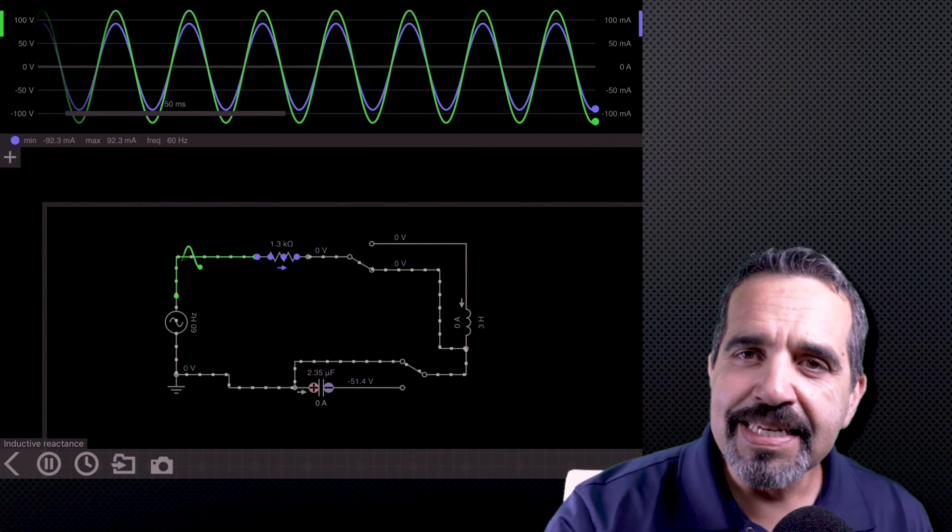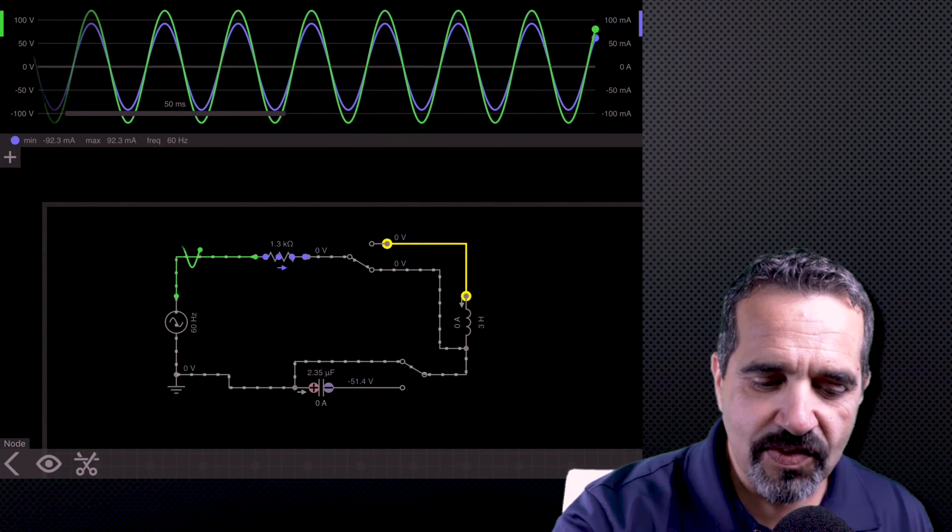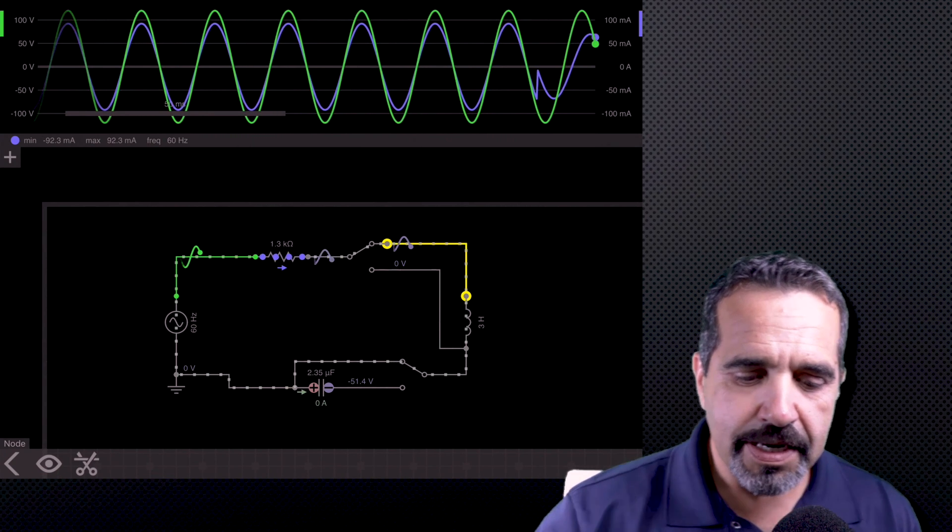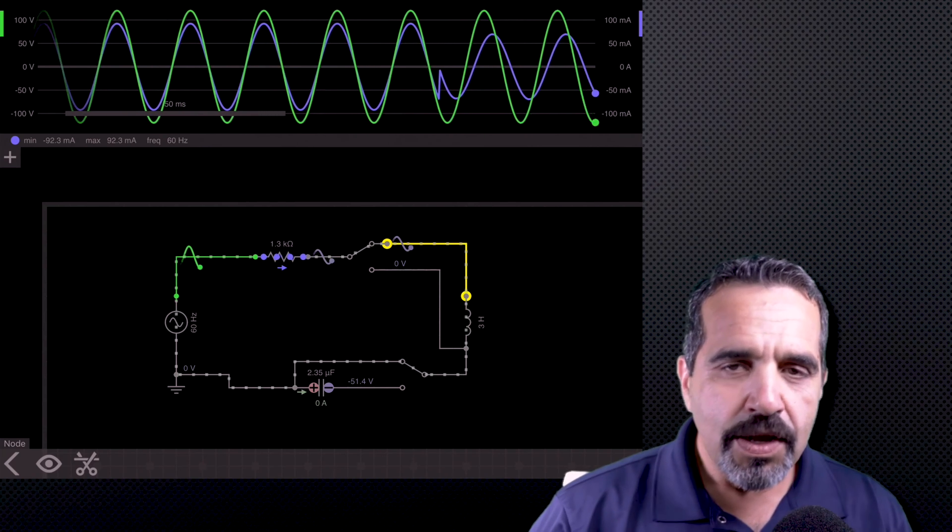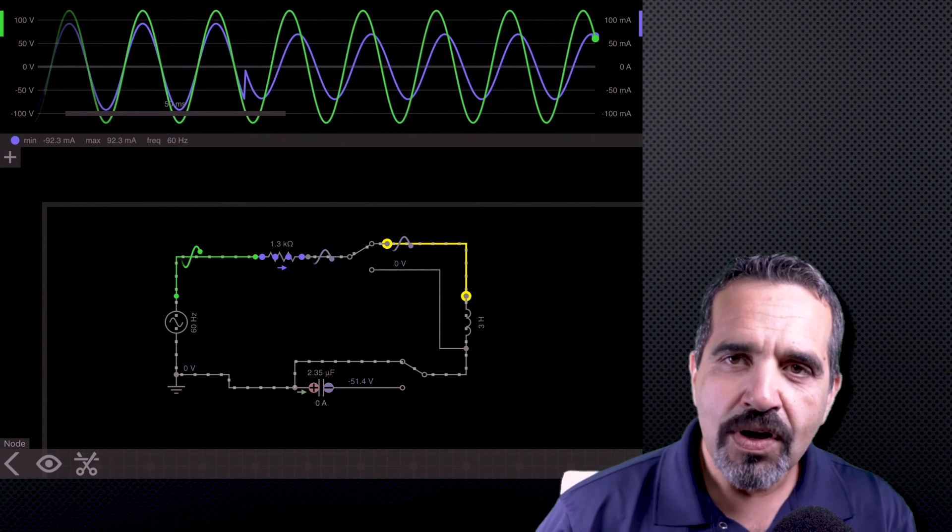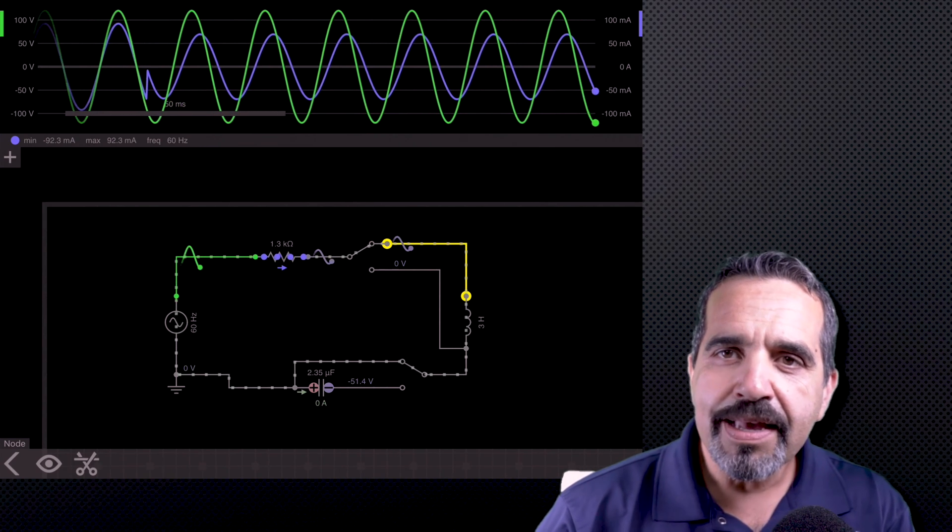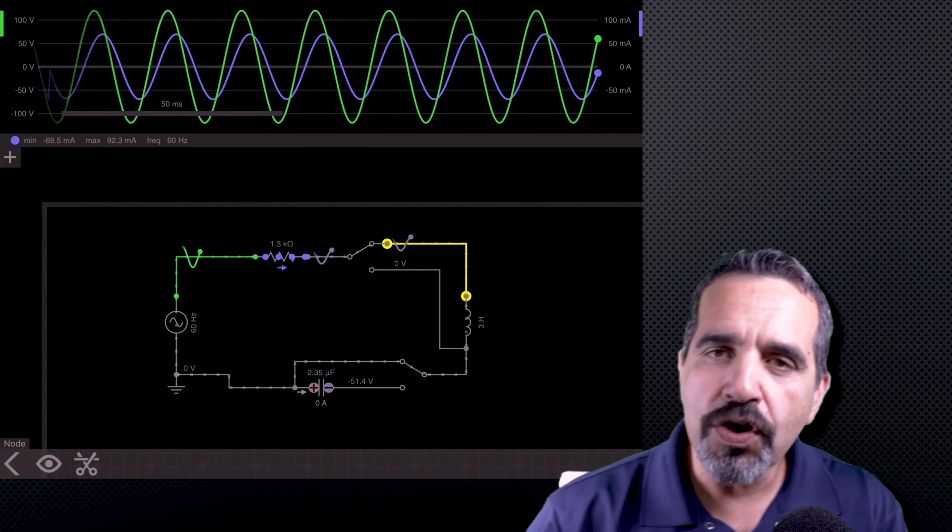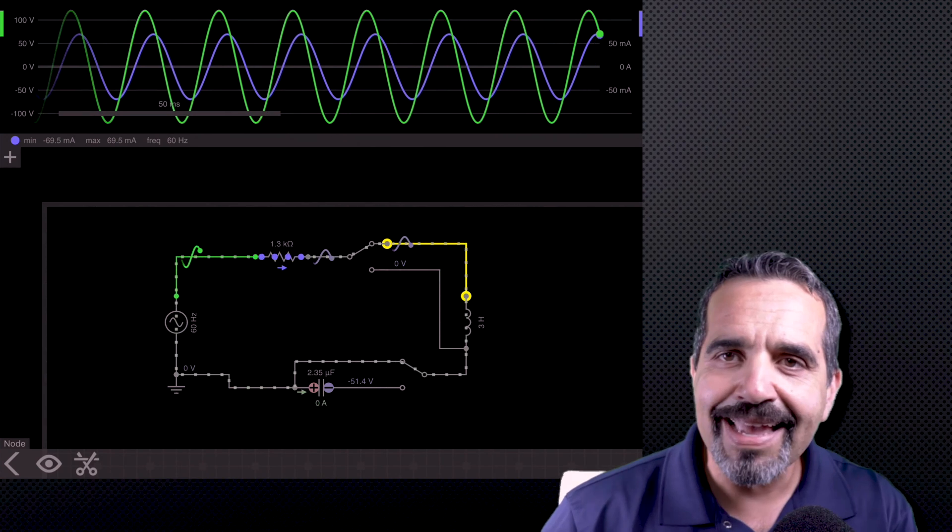But in an inductive circuit, here I'll make the switch. In an inductive circuit, you can now see that the waveform has changed where the voltage is actually leading the current. The current is lagging the voltage.